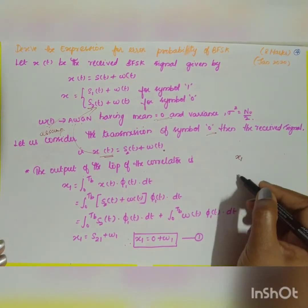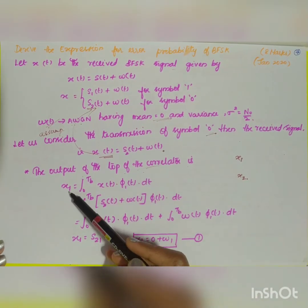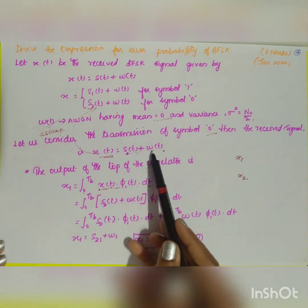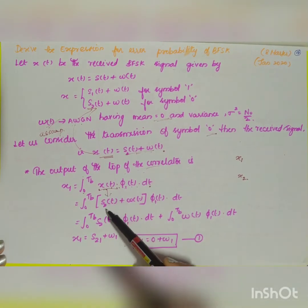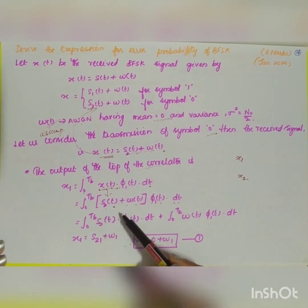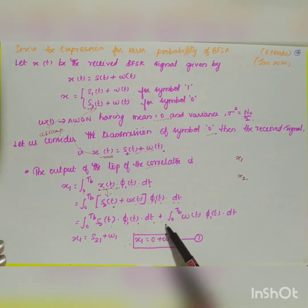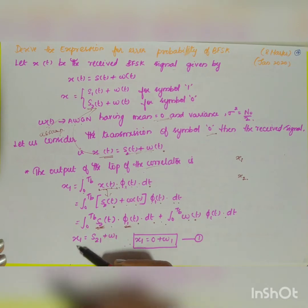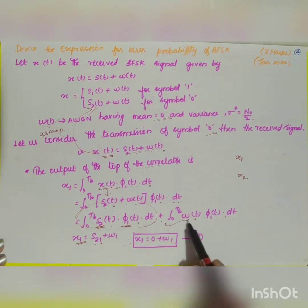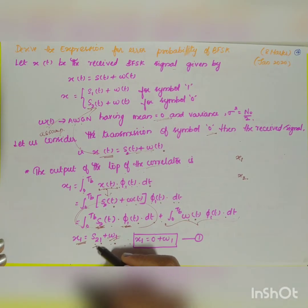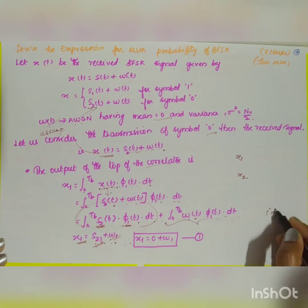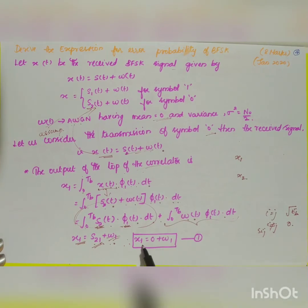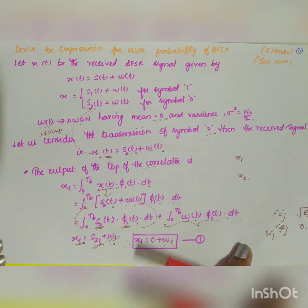The top correlator output is: x1 = ∫₀^Tb x(t)·φ1(t) dt. Substituting x(t) = s2(t) + w(t), this splits into ∫₀^Tb s2(t)·φ1(t) dt + ∫₀^Tb w(t)·φ1(t) dt, which gives s21 + w1. Since i ≠ j, the coefficient s21 = 0, so x1 = 0 + w1. This is equation 1.